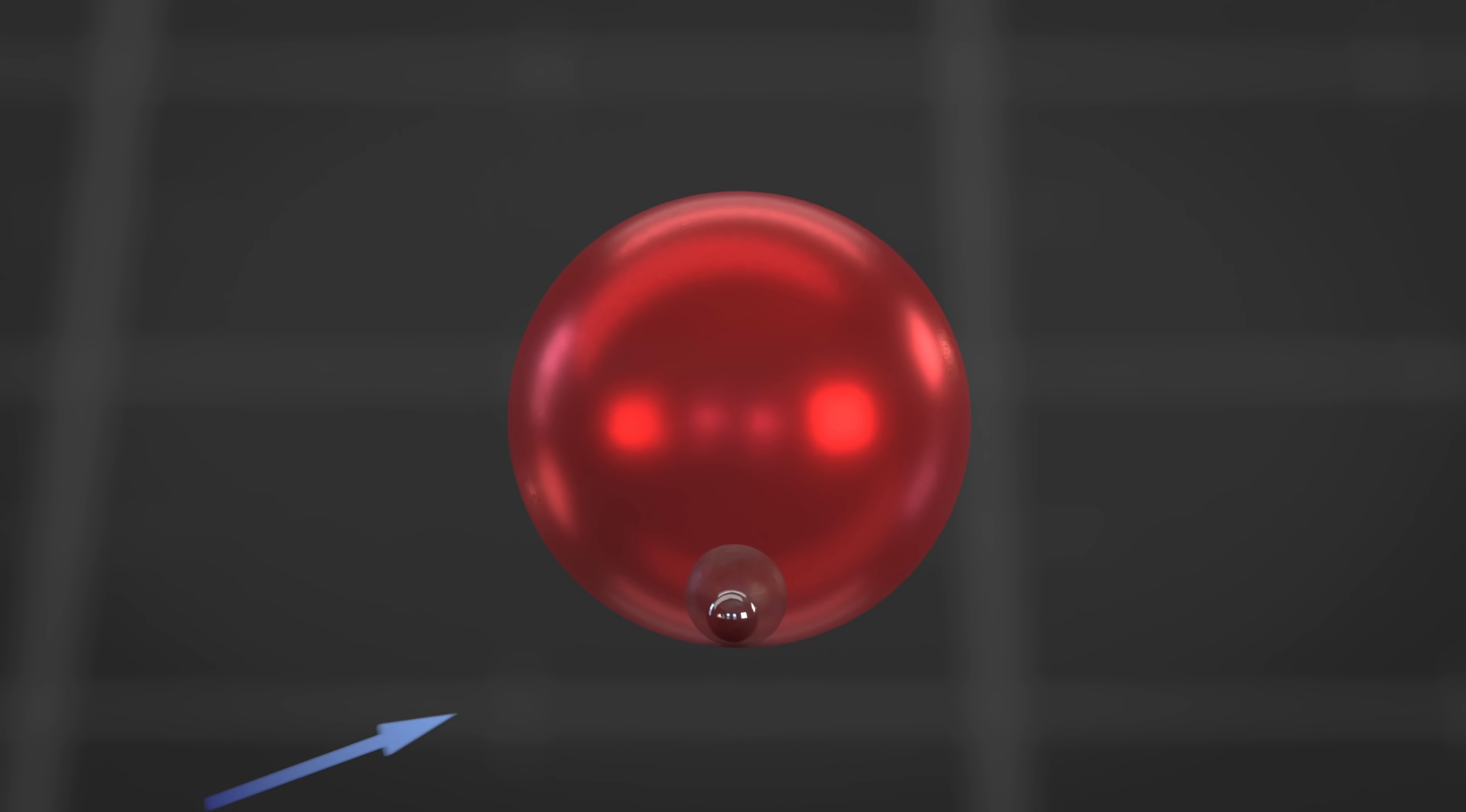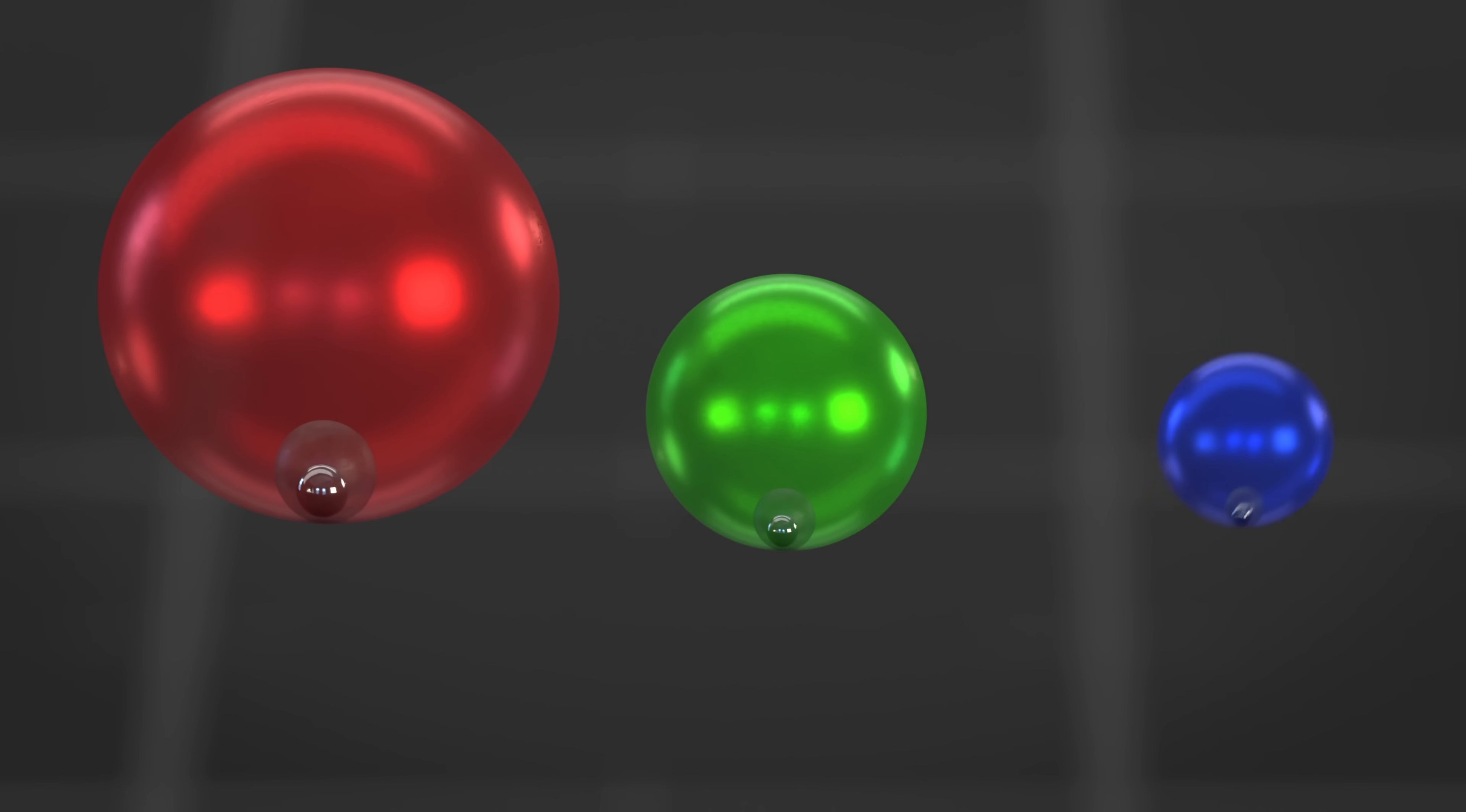But quantum dots are so small that the electron is confined in this process. Think of this as the electron not being able to jump as much as it would like to. How strong this confinement is depends on its size, and that in turn impacts what energy levels the electron will return with, which in turn decides what wavelength, or in other words, what color, the photon will have once it gets emitted.